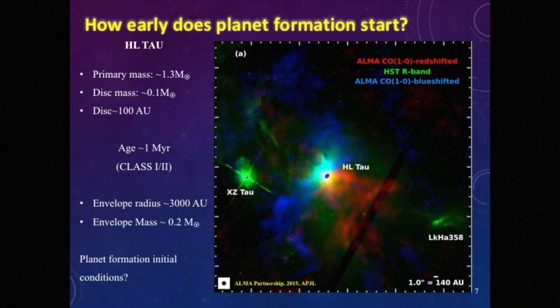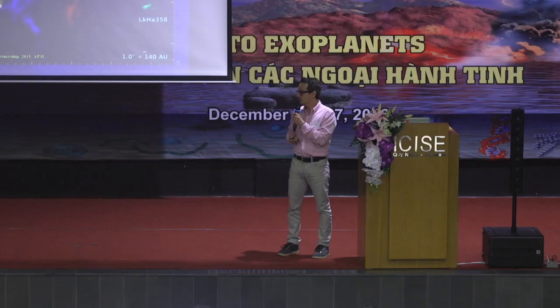When a planet forms in these disks, we have to take a look at the bigger picture. This is not just an isolated disk — it's in the middle of a cloud. There is an envelope around it, and there are outflows in these directions. So the initial stages of planet formation in this disk may be more dynamical than we previously thought.